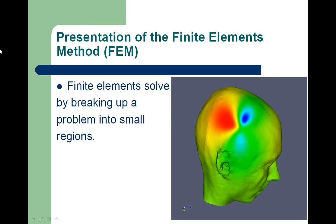Finite Elements solve by breaking up a problem into small regions, taking into account only the regions that are right next to the one being solved. In the case of Magnetic Fields, where FEM is often used, the vector potential is what is solved for in these regions. Magnetic field solutions are derived from the vector potential through differentiating the solution, which can cause problems in smoothness of field solutions. Theoretically, any partial differential equation class of problem can be solved using FEM.